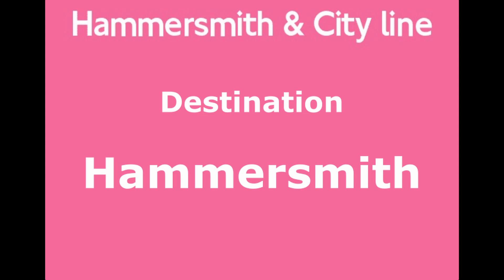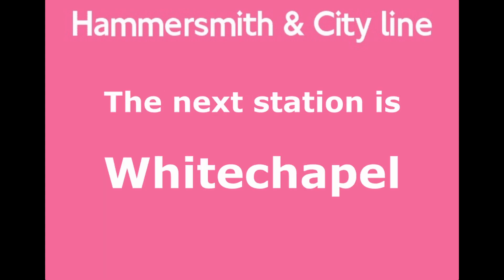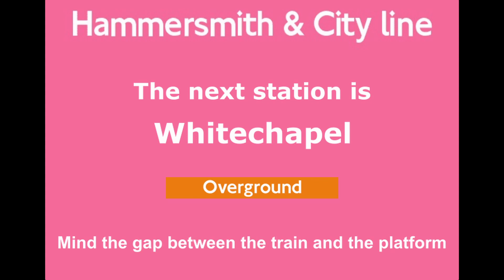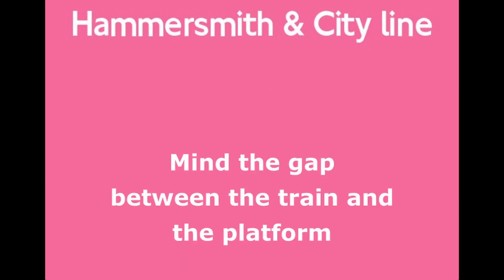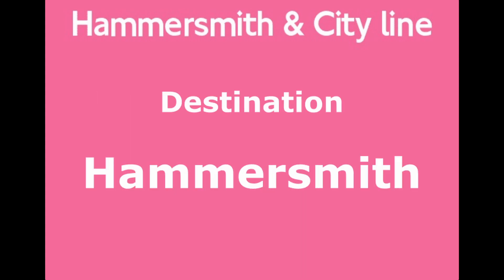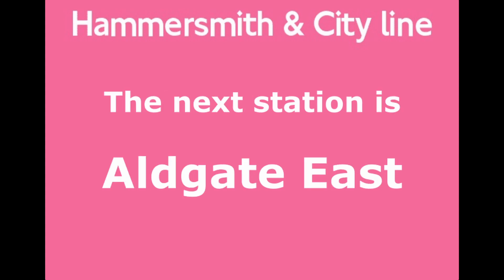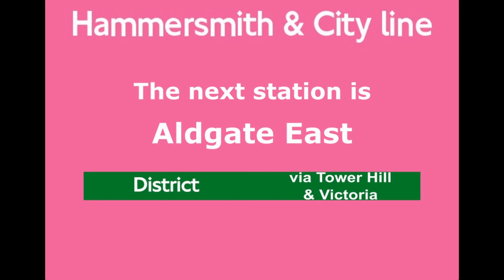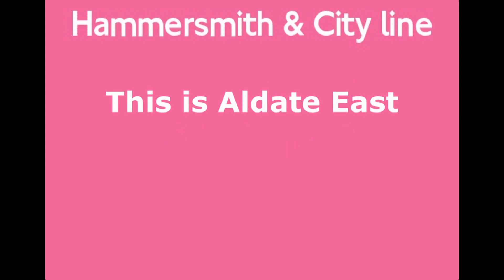This is a Hammersmith and City Line train to Hammersmith. The next station is Whitechapel. Change for London Overground Services. Mind the gap between the train and the platform. This is Whitechapel. This is a Hammersmith and City Line train to Hammersmith. The next station is Aldgate East. Change for the District Line via Tower Hill and Victoria. This is Aldgate East.